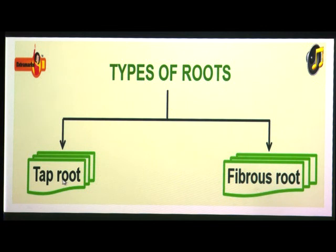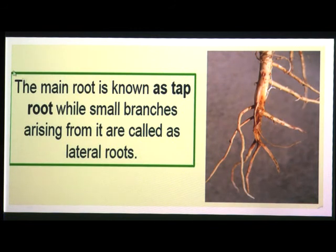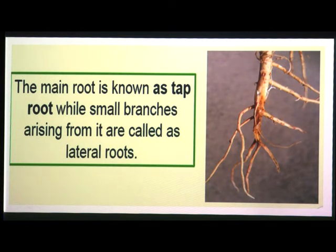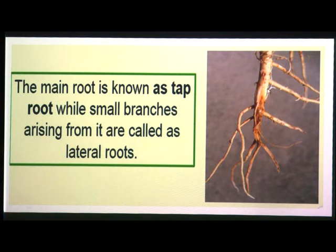Let us look at the tap root first. The main root is known as the tap root, while the small branches arising from it are called lateral roots. These lateral roots arise from the main root in various directions.